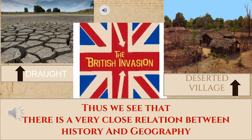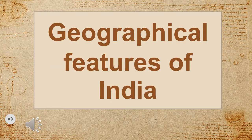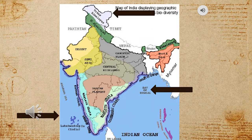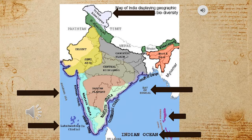Thus, we see that there is a very close relation between history and geography. Our country India extends far and wide. At its north lie the Himalayas, to the east the Bay of Bengal, to the west is the Arabian Sea, and to the south the Indian Ocean.